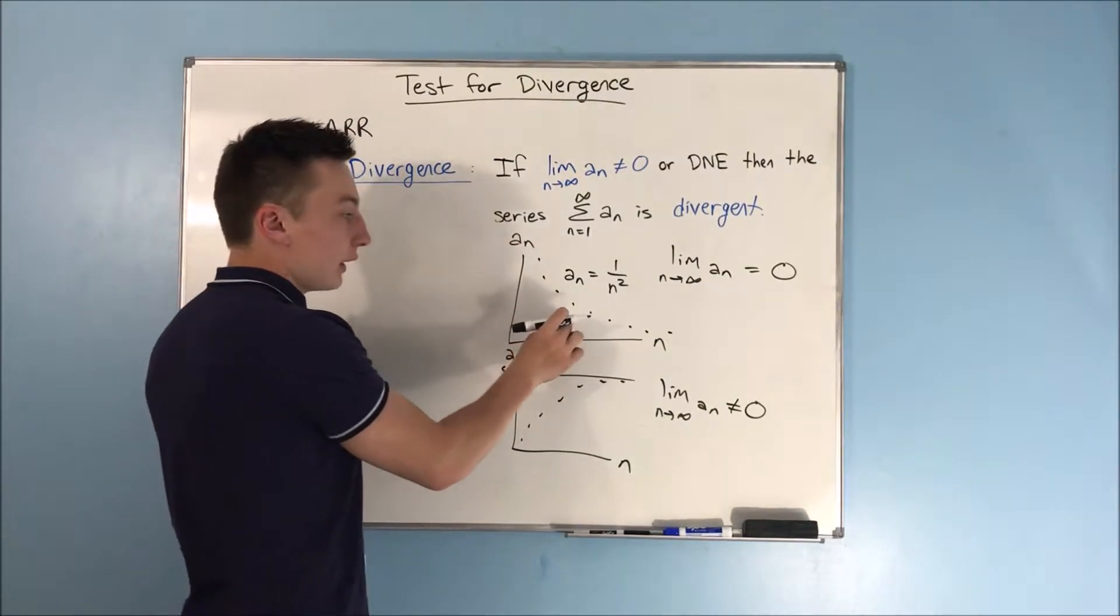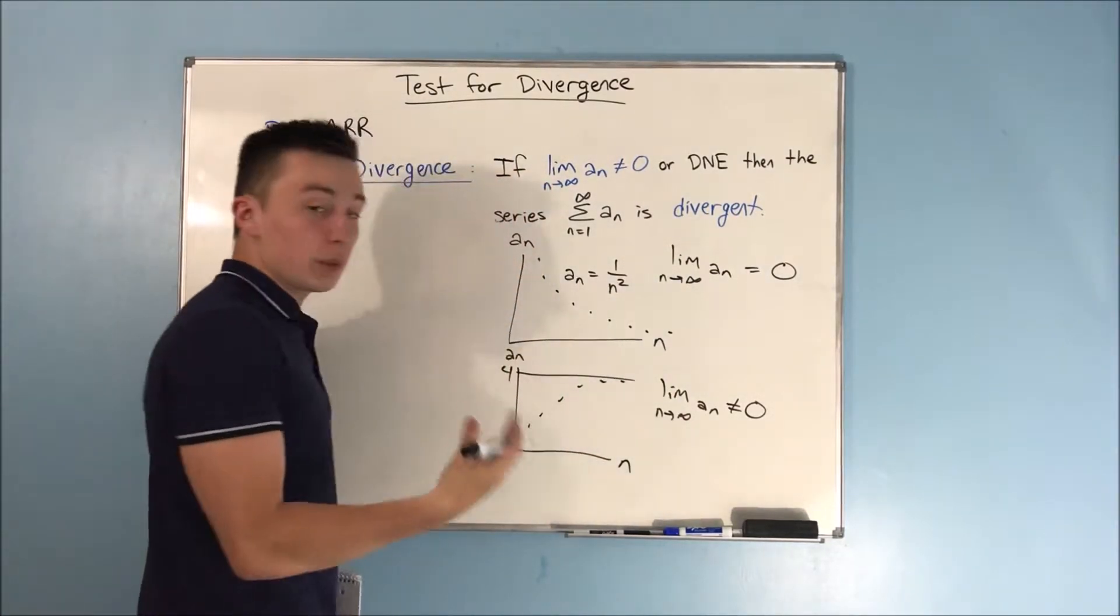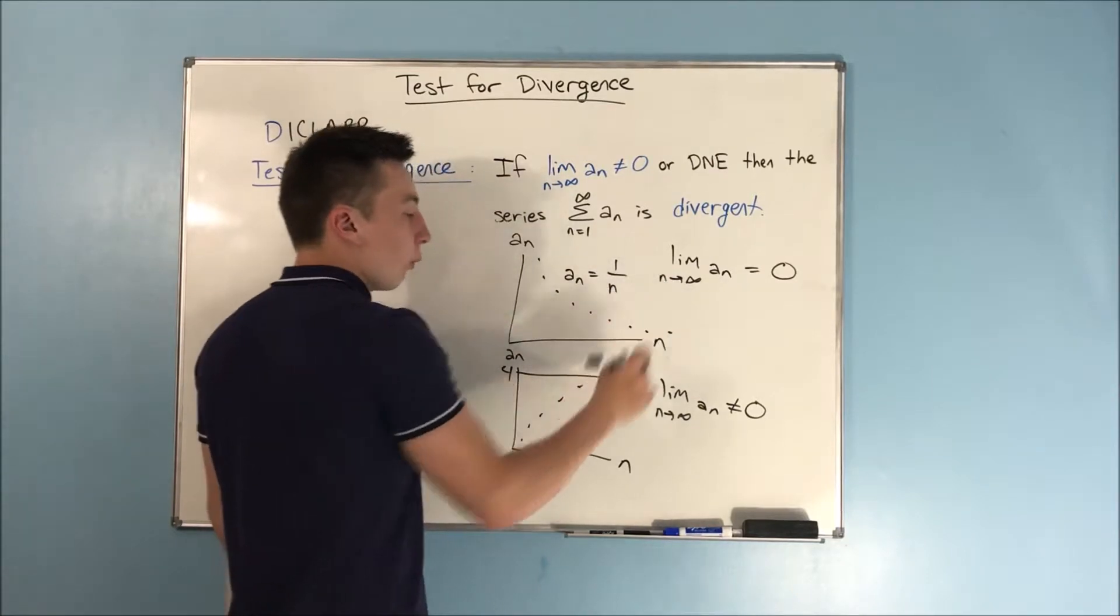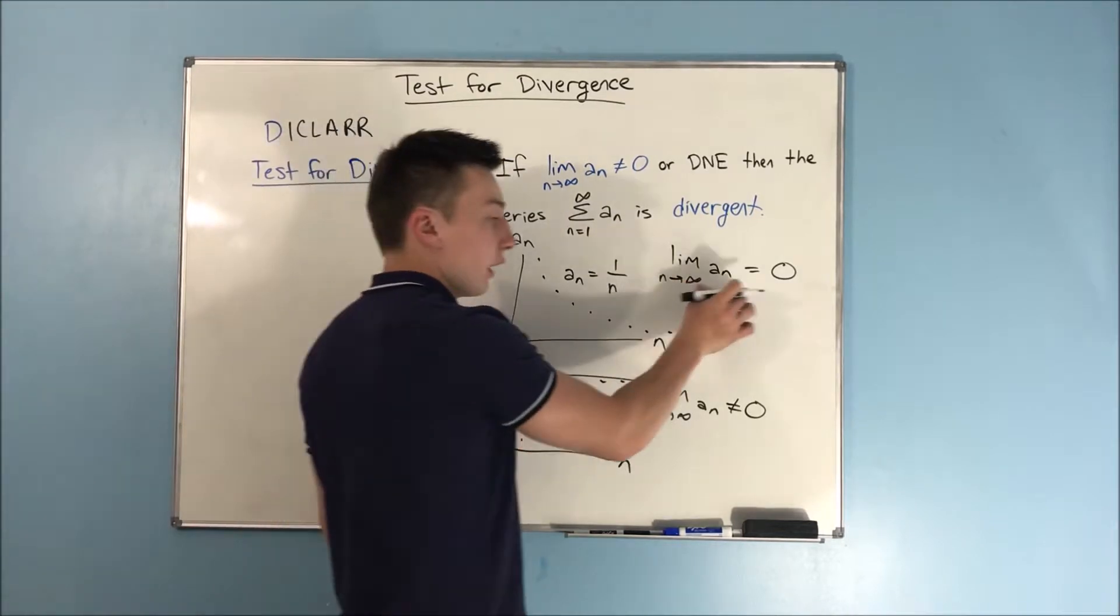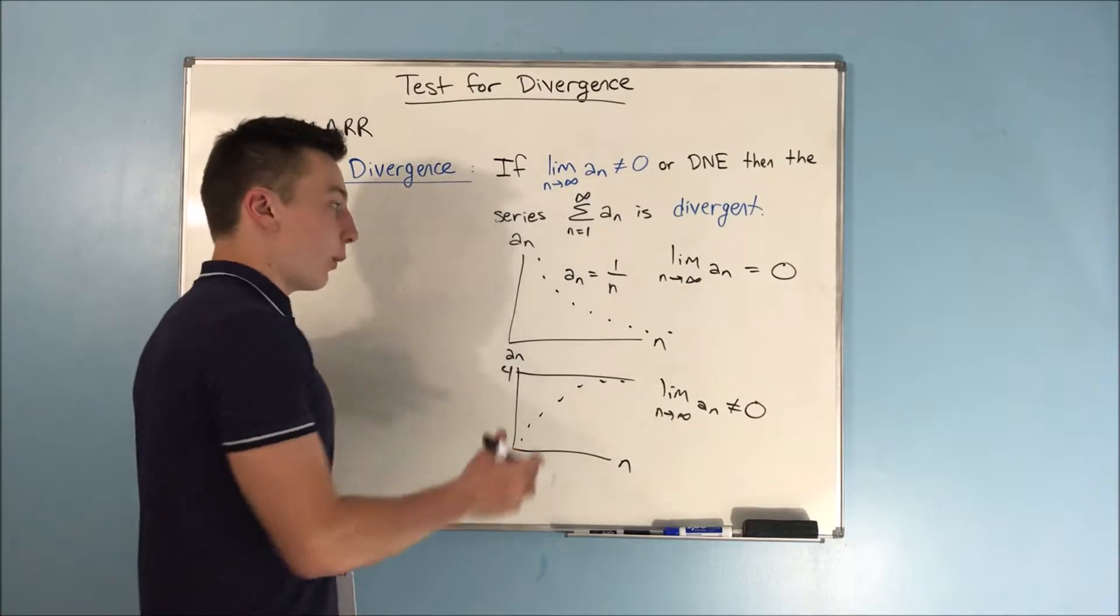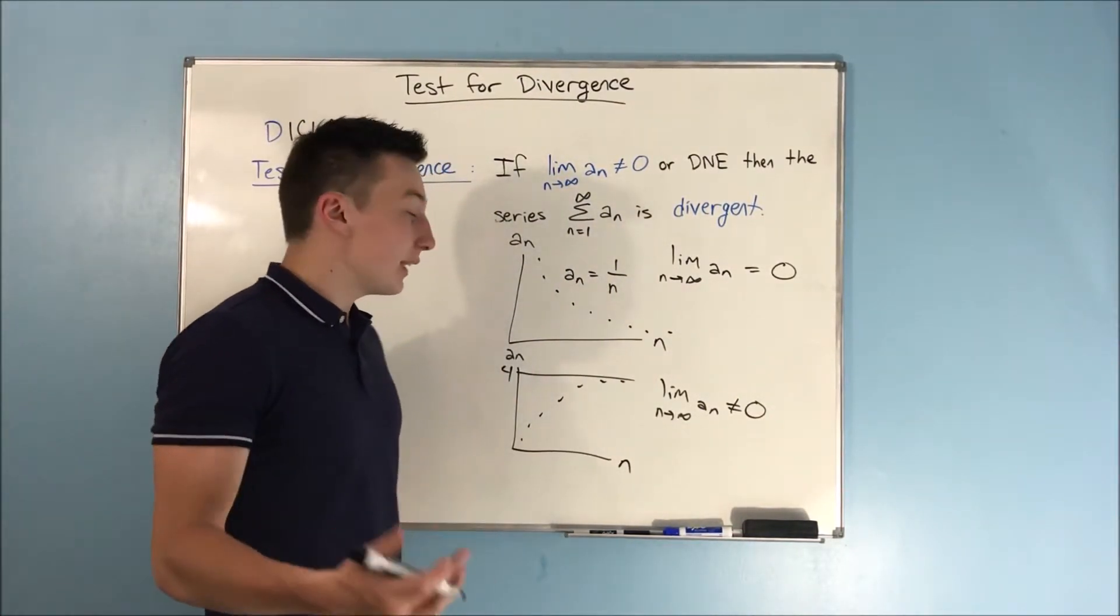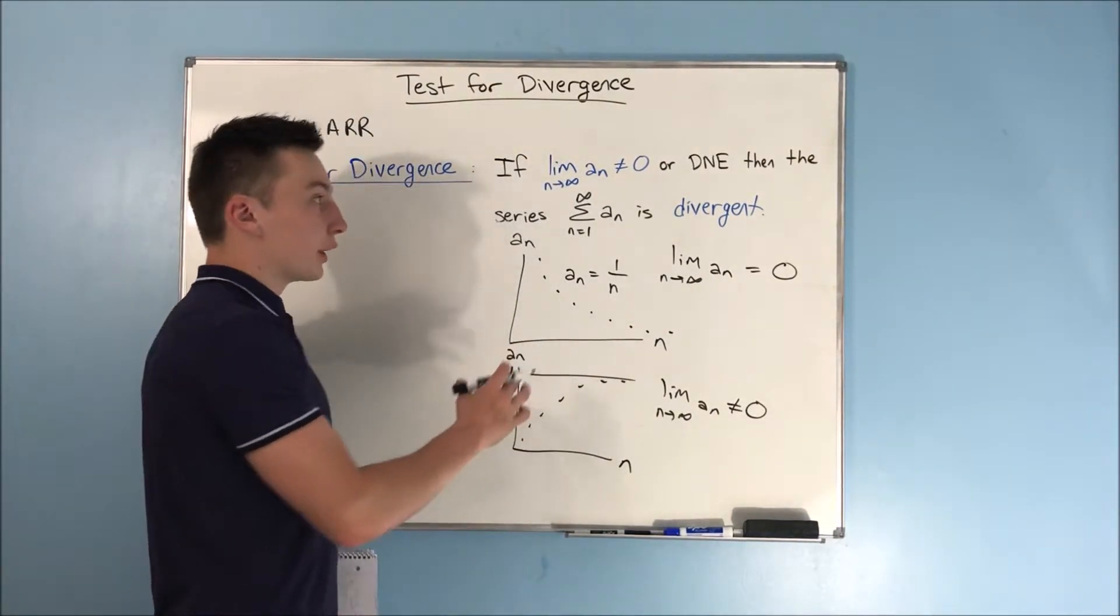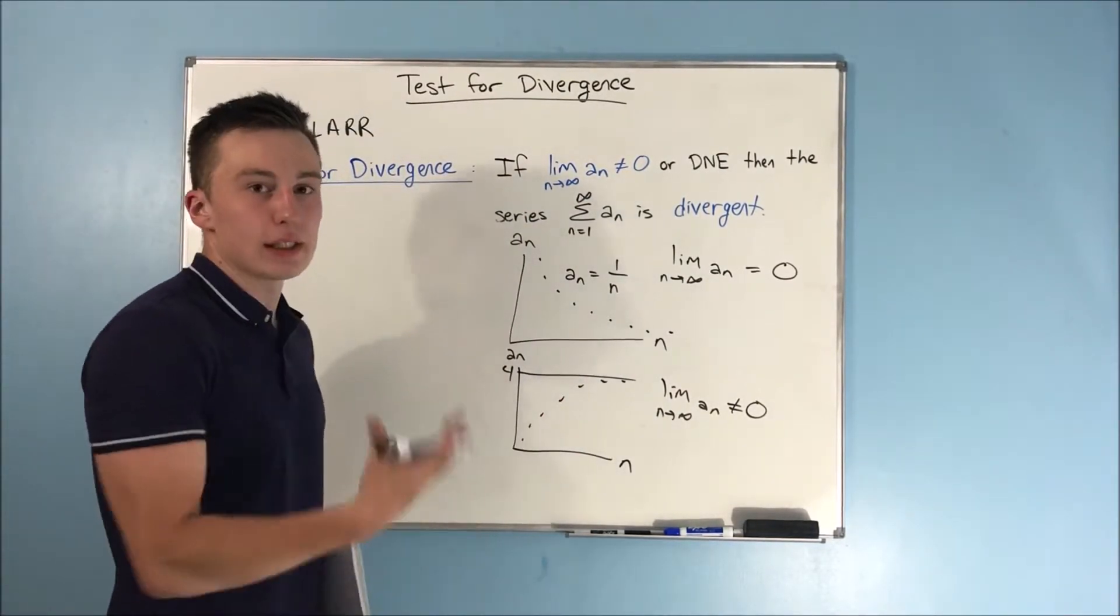Now, this does not automatically say that it is convergent if the limit as n approaches infinity of a sub n does equal zero. Because what if you have a sub n equal to one over n? Well, the limit as n approaches infinity of a sub n is still equal to zero. But we know that this is a p series, and in this case, p is equal to one, so that means that this actually diverges. So you can only use this to prove divergence. You can't prove convergence with the test for divergence.